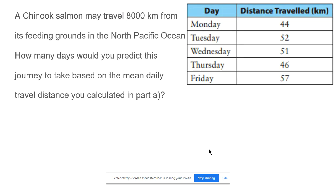Part C: Chinook salmon may travel 8,000 kilometers from their feeding ground. How many days would this journey take based on the daily mean from part A? We divide 8,000 kilometers by 50 kilometers per day. 8,000 divided by 50 equals 160 days for the journey.